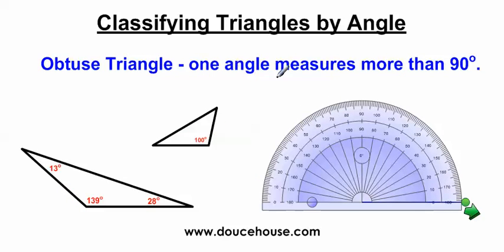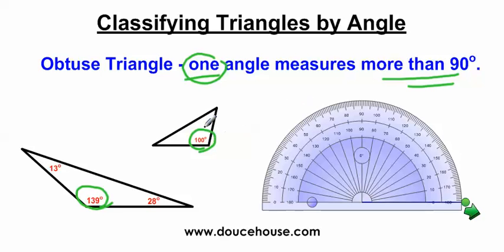Moving on, we have the obtuse triangle. One angle measures more than 90 degrees. So if one of the angles is more than 90 degrees, you have an obtuse triangle. If you're not sure whether an angle is obtuse and you don't have a protractor, you can tear a corner off a piece of paper and lay it over the sides. Notice that one side goes beyond the 90-degree corner, so you know that angle has to be obtuse. I'll also often tell students to draw a line perpendicular to the biggest angle — if you draw a 90-degree line there, it's a good indicator that you have an obtuse angle and therefore an obtuse triangle.